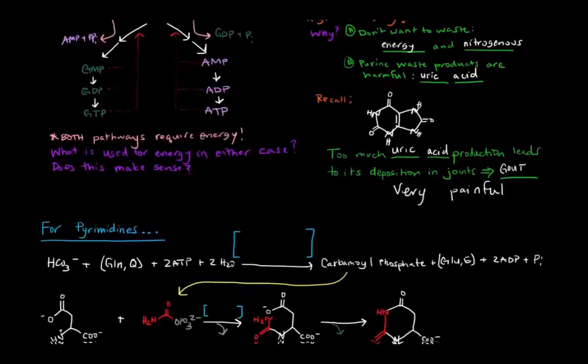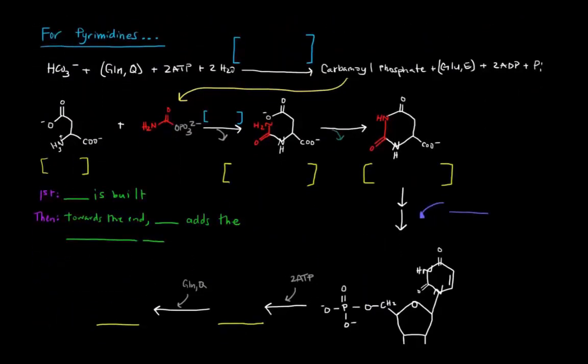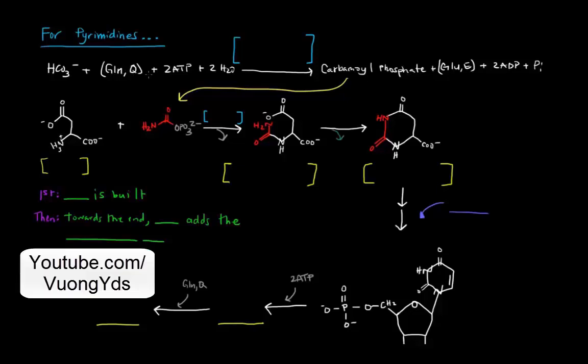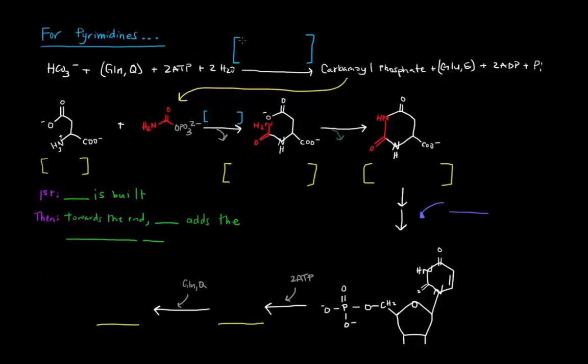But what about for pyrimidines? For pyrimidines, the process is a little bit different. So in pyrimidines, we start off by producing carbamoyl phosphate from bicarbonate and glutamine and some ATP. So we're producing carbamoyl phosphate. In this case, we're going to have this enzyme, carbamoyl phosphate synthetase, which we've talked about in the urea cycle, but that was carbamoyl phosphate synthetase 1. This one is carbamoyl phosphate synthetase 2, or CPS2. So it's still making carbamoyl phosphate, but in a slightly different way. And in this case, it's involved in pyrimidine synthesis.